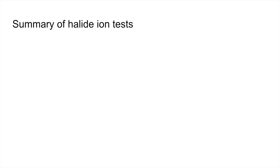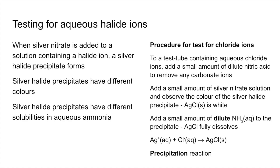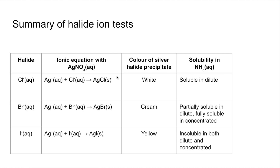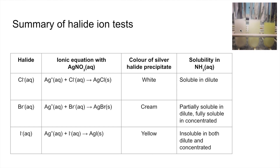Here's a summary table of all halide ion tests. For chloride: white precipitate, fully soluble in dilute aqueous ammonia. For bromide: cream precipitate, partially soluble in dilute aqueous ammonia but fully soluble in concentrated aqueous ammonia. For iodide: yellow precipitate of silver iodide, insoluble in both dilute and concentrated aqueous ammonia. A photo shows the three test tubes — silver chloride, the slightly creamier silver bromide, and yellow silver iodide.